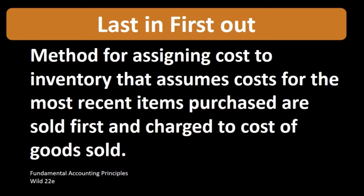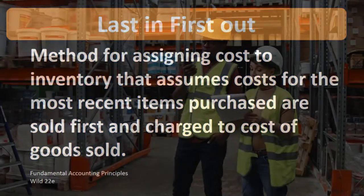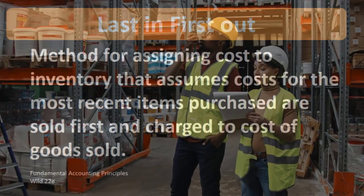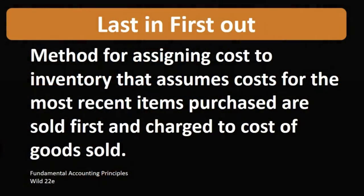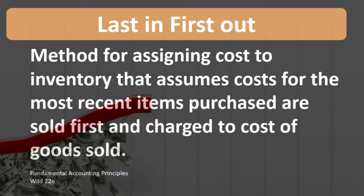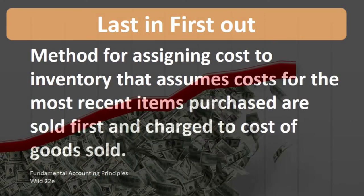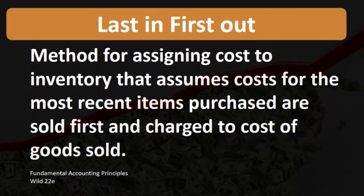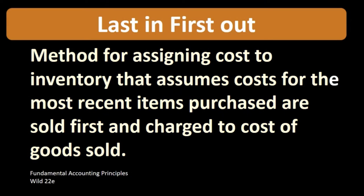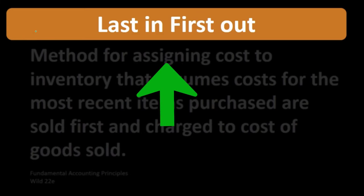We are talking about an inventory cost flow assumption method — not specific identification, where we would specifically identify the inventory sold and know exactly what we purchased that unit for. Last in first out is similar to first in first out or an average method, in that those are the types of assumption methods available.